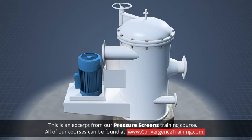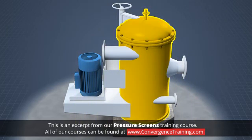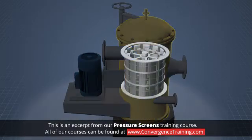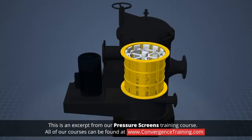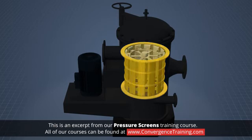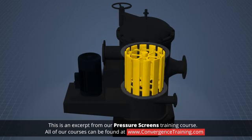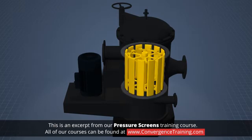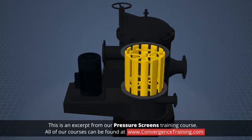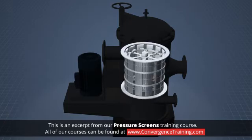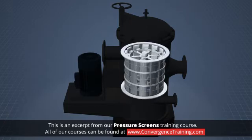A typical pressure screen consists of a vertical cylindrical housing which contains a perforated cylindrical screen basket. Within the basket is a spinning rotor which supports foils or shaped bumps that run close to the surface of the screen.